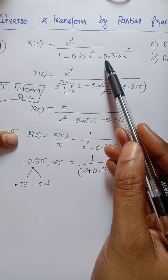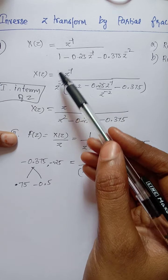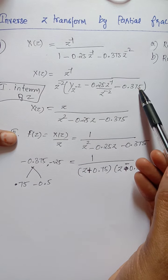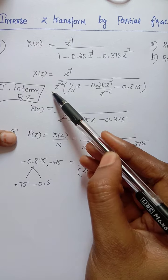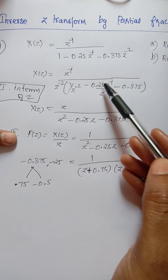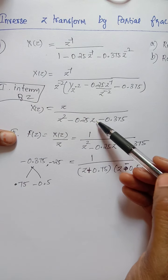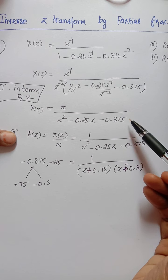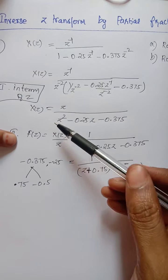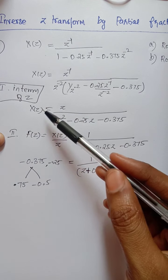The first step is to write X(z) in terms of positive powers. We take z⁻² outside — dividing by z⁻² — so we get z² in the denominator, and the expression becomes z divided by z² minus 0.25z minus 0.375. The numerator z⁻¹ divided by z⁻² becomes z.